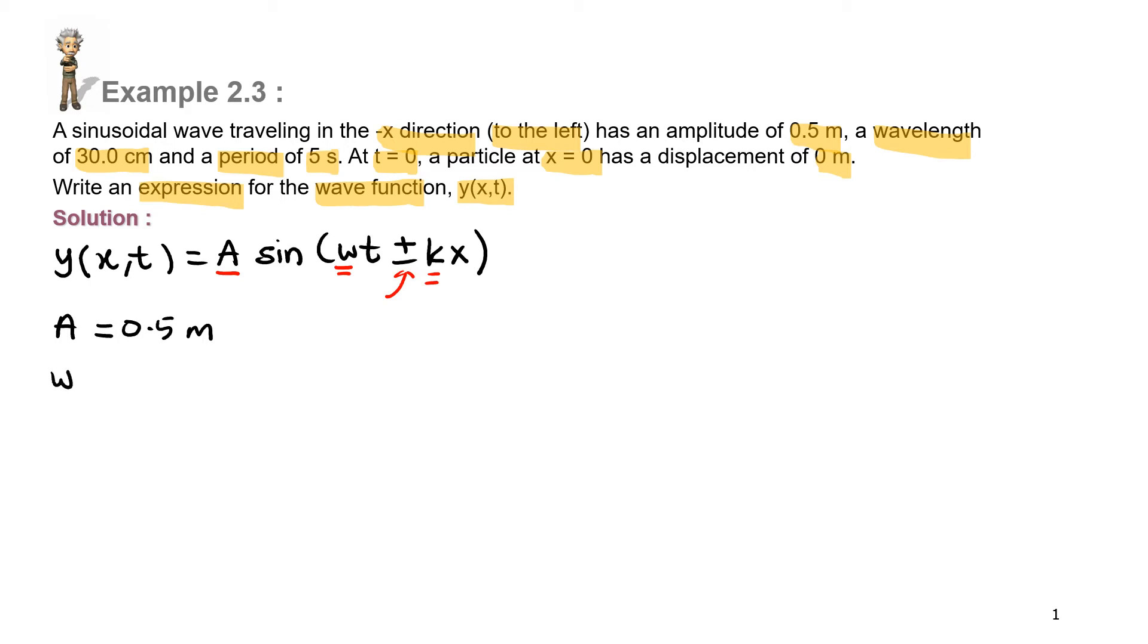And then omega, omega is equal to 2 pi over T. Since kita ada period dekat sini, 5 second. So, 2 pi divided by 5, so kita akan dapat omega is equal to 0.4 pi radian per second.